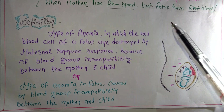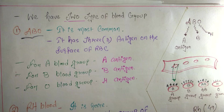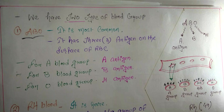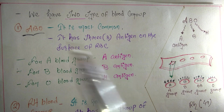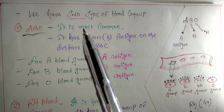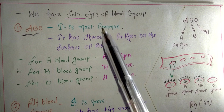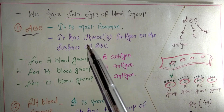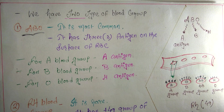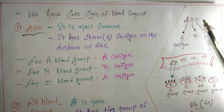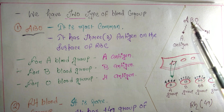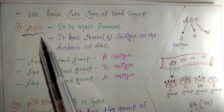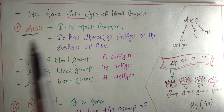Now let's understand what RH negative and RH positive mean. We have two types of blood groups: ABO and RH. ABO is the most common — everyone usually has an ABO blood group. ABO includes A, B, AB, and O blood groups. For example, my blood group is B positive.